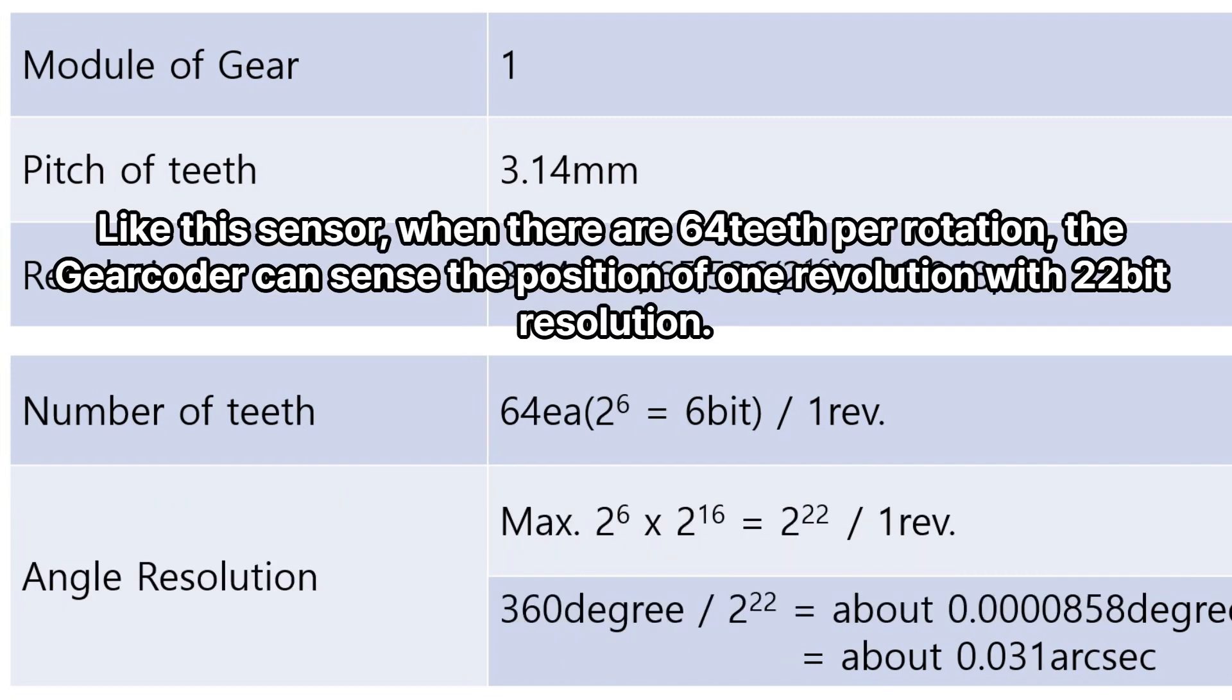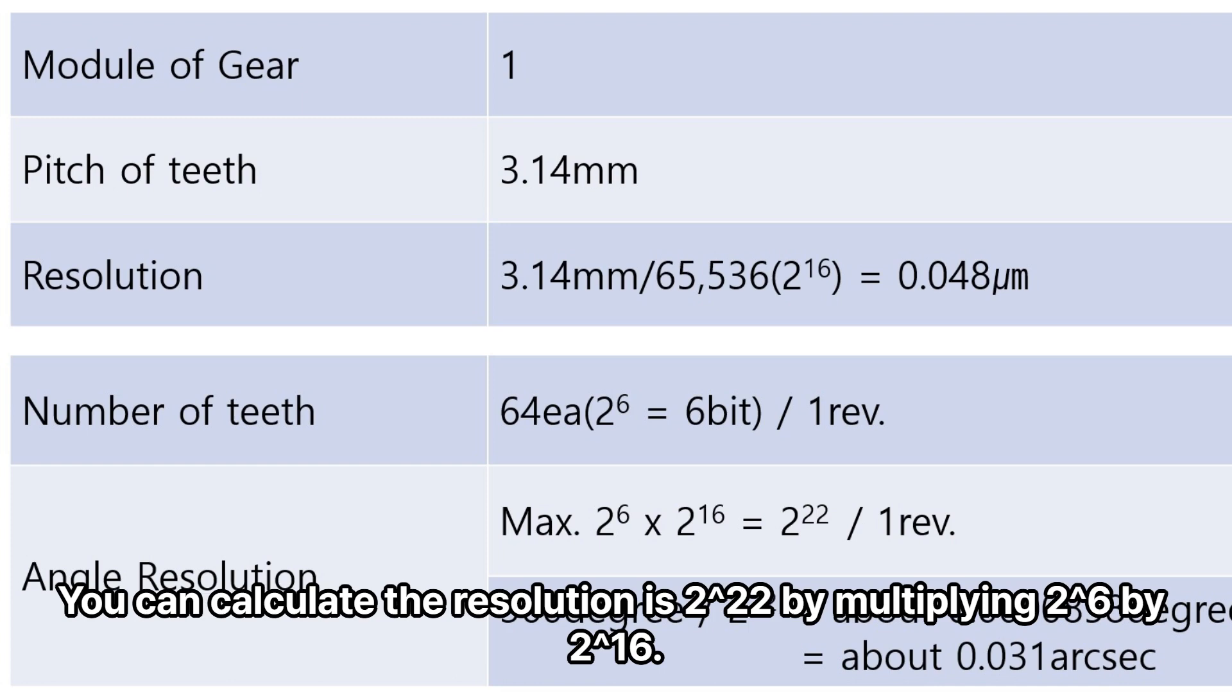Like this sensor, when there are 64 gear teeth per rotation, the gearcoder can sense the position of one revolution with 22-bit resolution. You can calculate the resolution is 2 to the 22nd power by multiplying 2 to the 6th power by 2 to the 16th power.